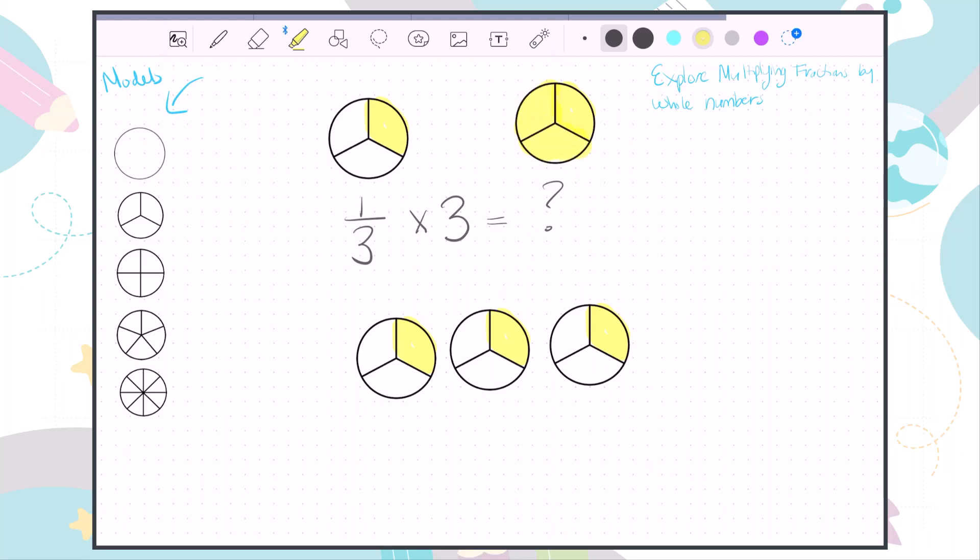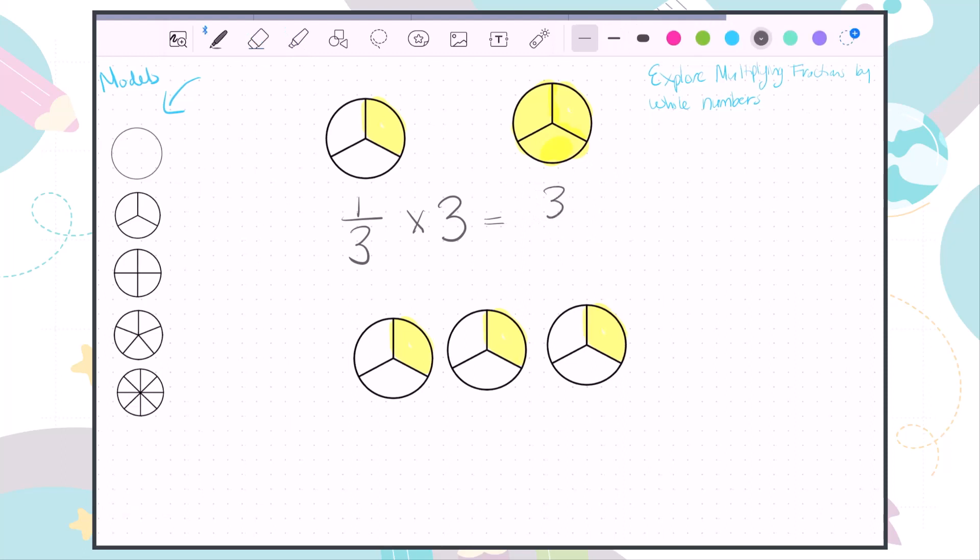So that we have our answer. And as you can see, 3/3 also equals one whole. So just a reminder that multiplication is also repeated addition, so we can repeat any model that we use.